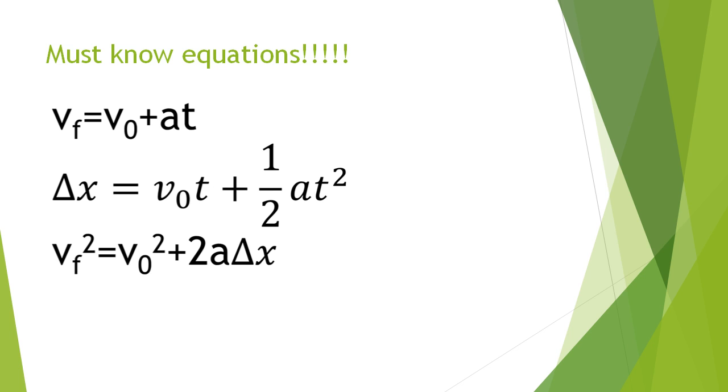You need to memorize these three equations that you would see right here: VF equals V0 plus at, delta x equals V0t plus half at squared, and VF squared equals V0 squared plus 2a times delta x.